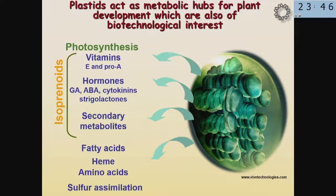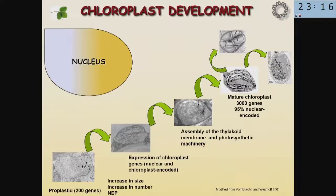I want to emphasize that in addition to being responsible for the photosynthetic process, chloroplasts are also metabolic hubs of the plant cell, because inside these organelles takes place an enormous amount of metabolic processes that are essential for plants but also very important for humans. This includes, for example, the biosynthesis of many important secondary metabolites such as vitamins.